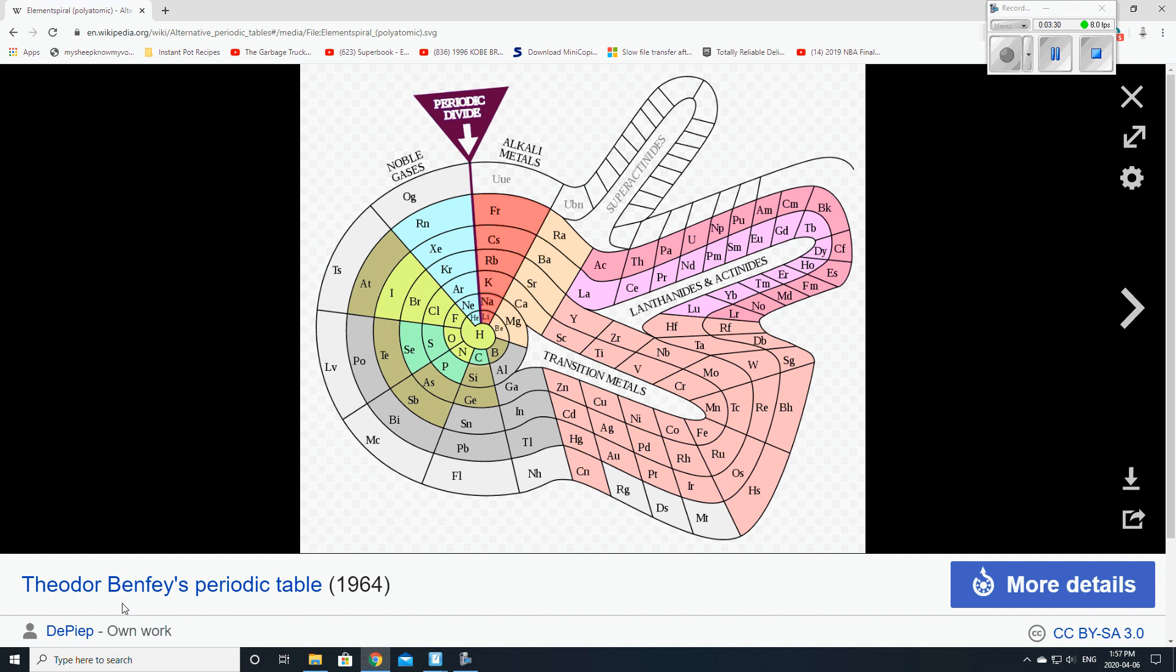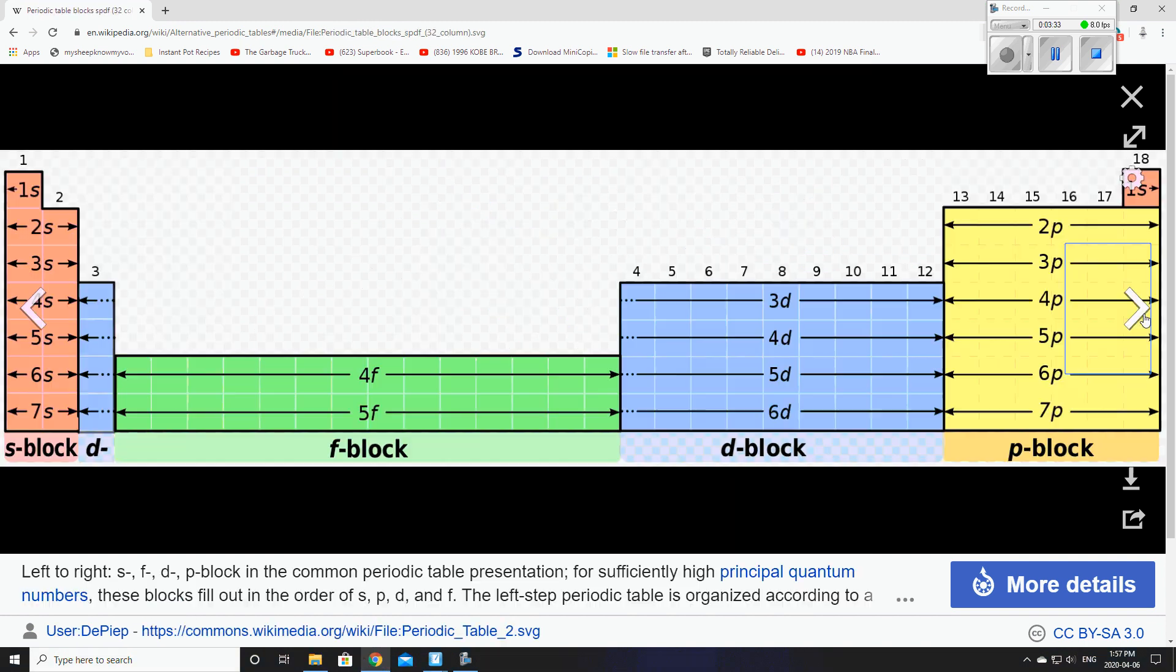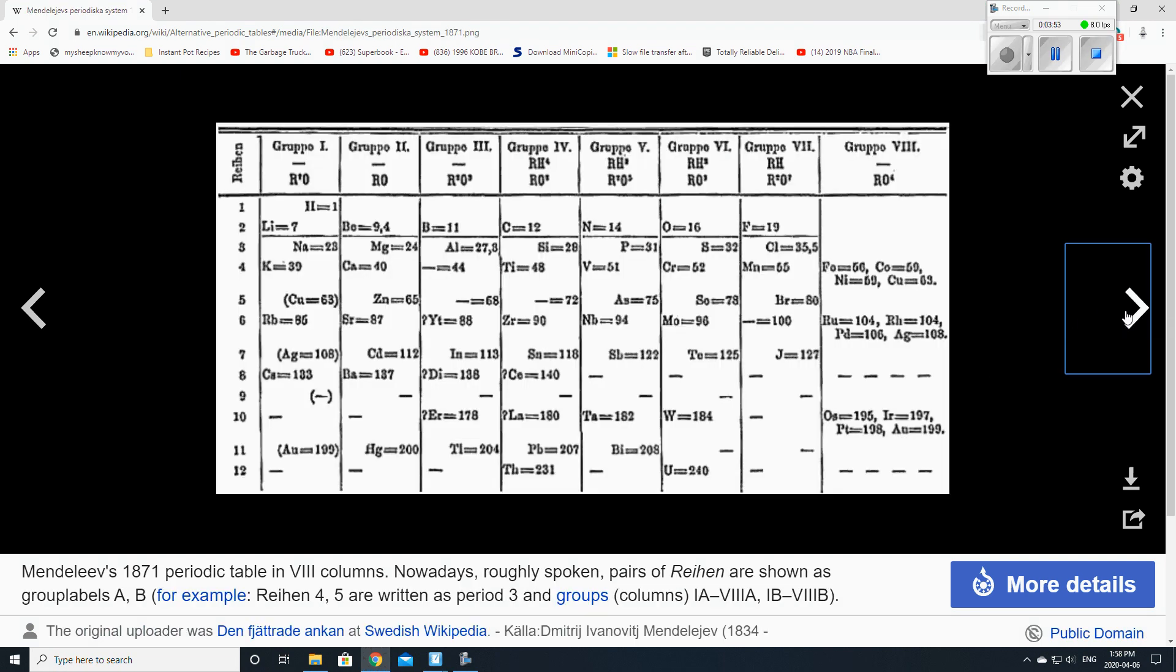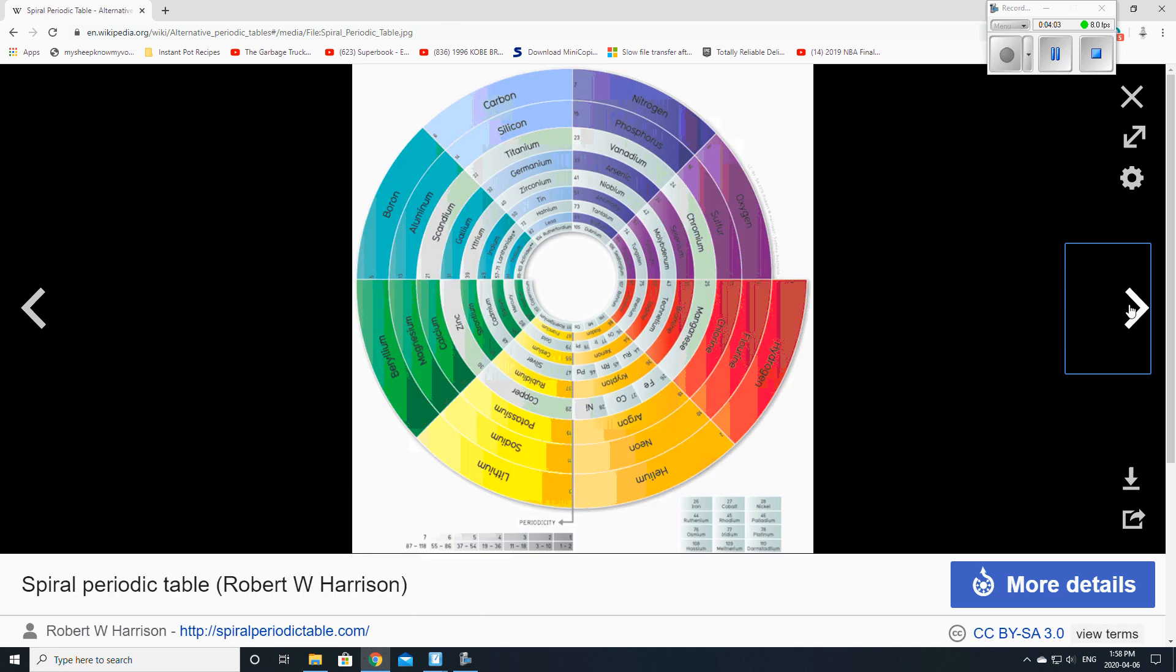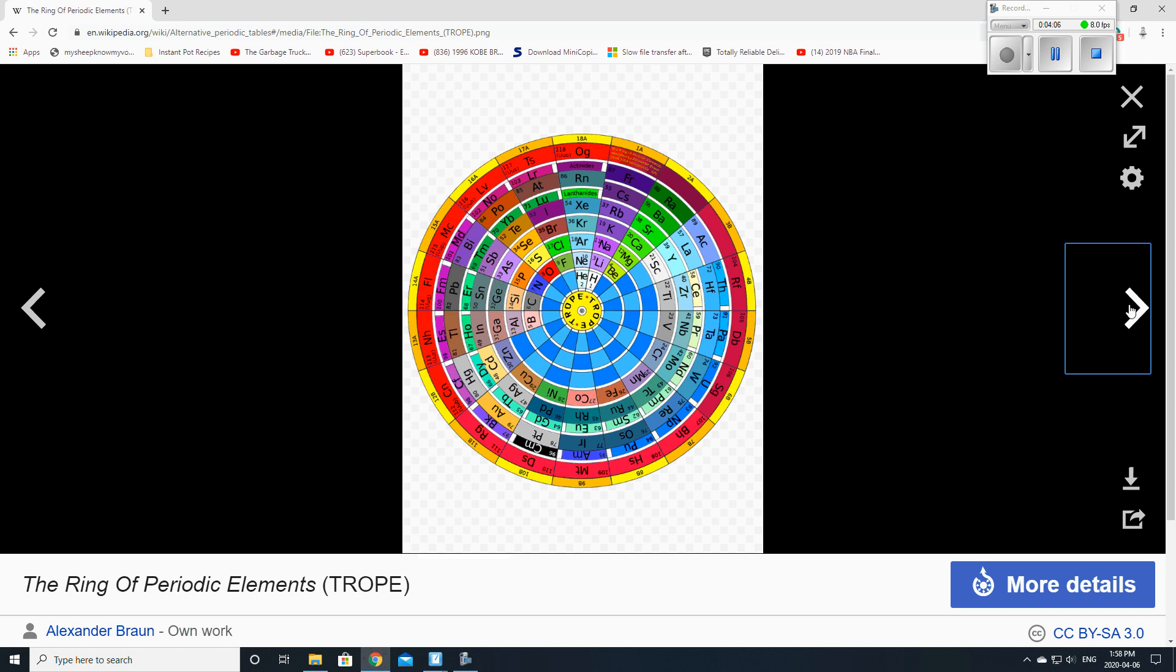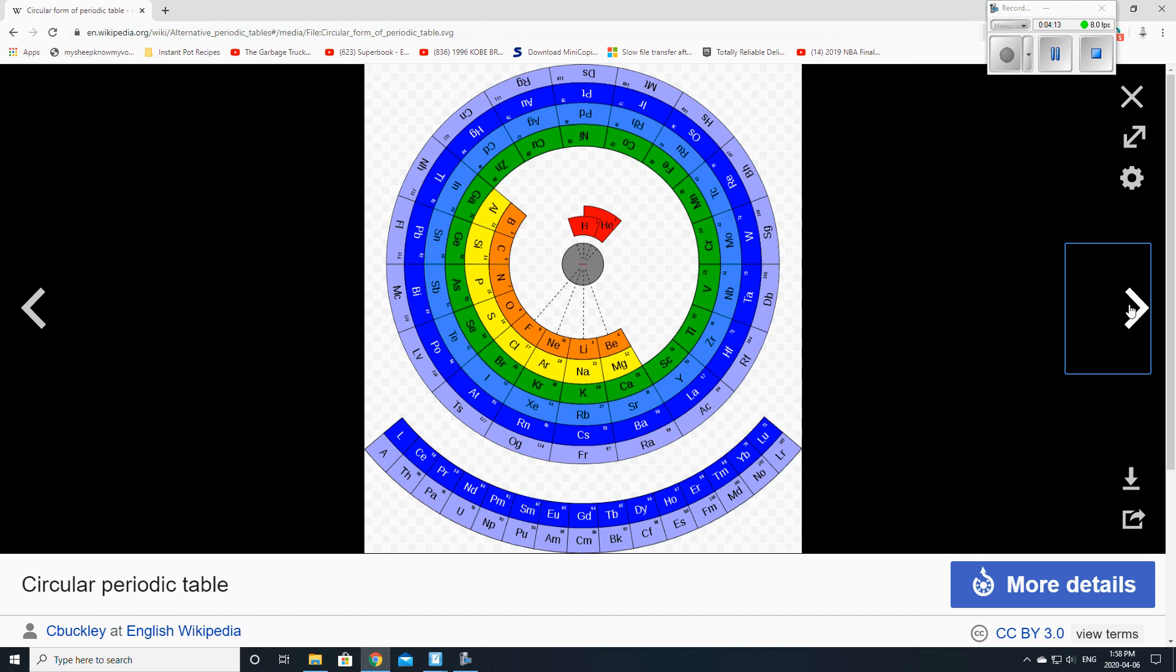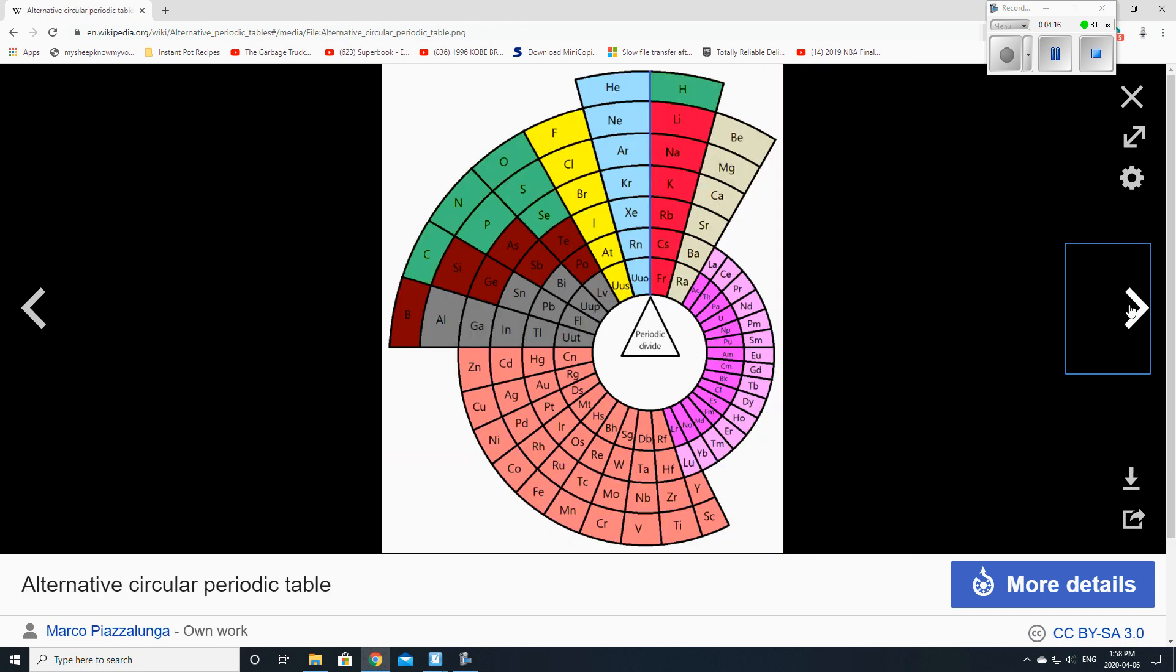So this is Theodore Benfay's periodic table. This is like SFD block. This is another type of periodic table, the ADOMA periodic table. It's actually related with the electron configurations, so the way electrons are positioned. This is Mendeleev's periodic table that you also saw in the video, how he kind of organized things in the beginning. Spiral periodic table. Ring of periodic table elements. Curled ribbon periodic table.